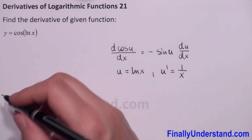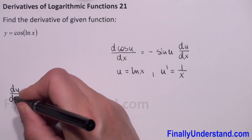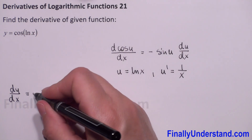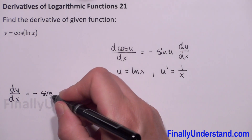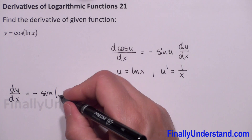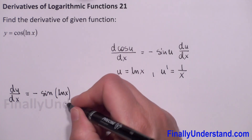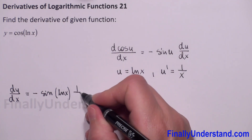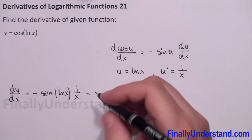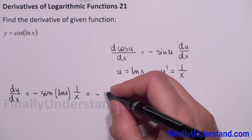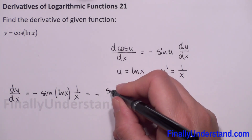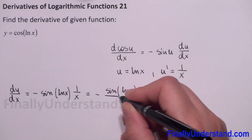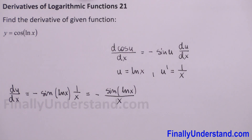Now we substitute: the derivative of u with respect to x gives us negative sine of natural log of x times 1 over x. Since negative times positive is negative, we can rewrite this as negative sine of natural log of x over x. This is the solution.